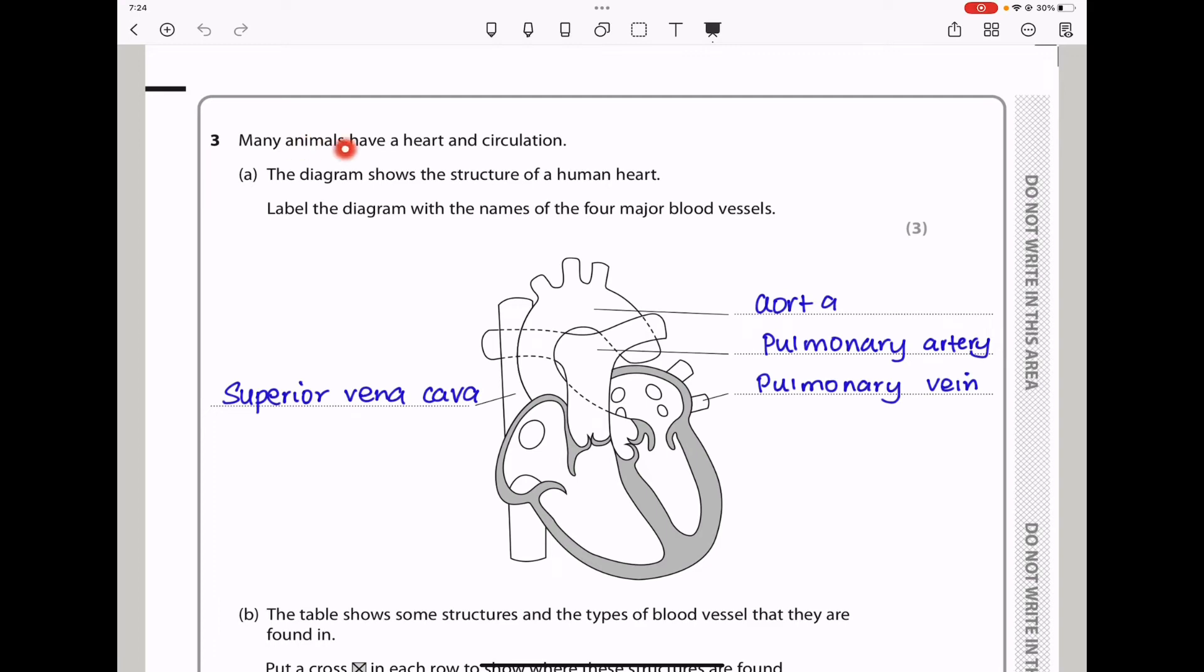Question 3. Many animals have a heart and circulation. The diagram shows the structure of a human heart. They want you to label the diagram with the names of four major blood vessels. So we can see this is the right part of the heart and that is the left part of the heart. This is where we have the deoxygenated blood and that is where we have oxygenated blood. This blood vessel brings in oxygenated blood from the lungs and that should be called the pulmonary vein, while this blood vessel here takes blood from this right part of the heart. So it takes blood to the lungs and that should be called the pulmonary artery.